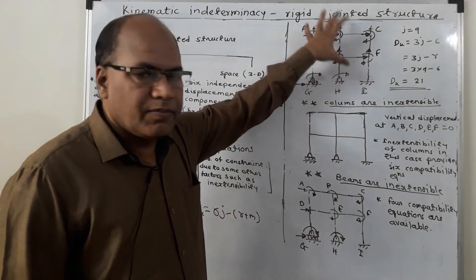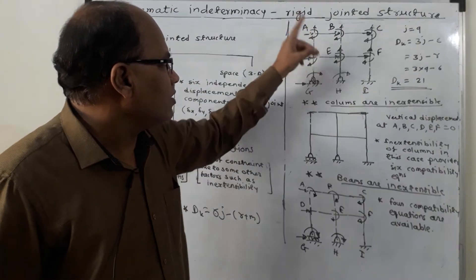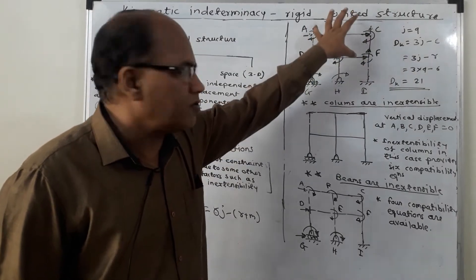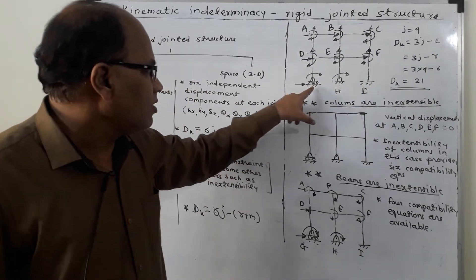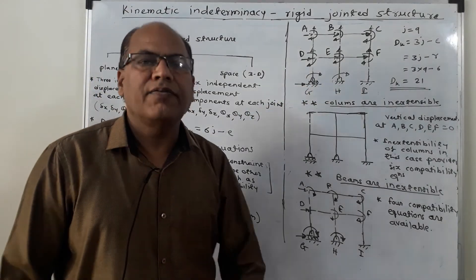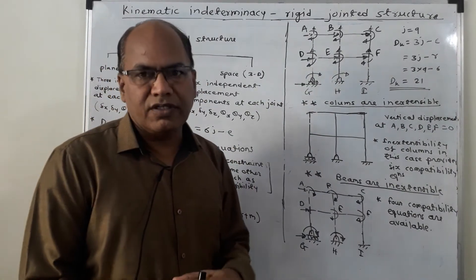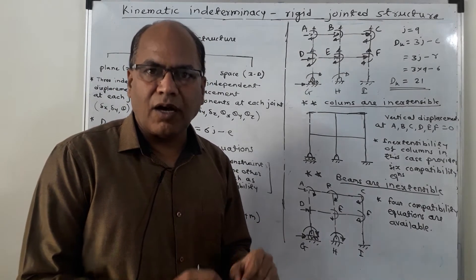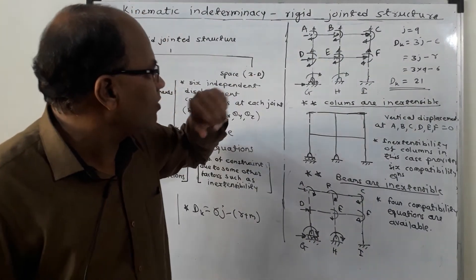I am considering a double storied building frame. It has 6 number of rigid joints: A, B, C, D, E, F, and supports G, H, I. Out of these 3 supports, G is the roller support, H is the hinge support, and I is the fixed support. To get the degree of kinematic indeterminacy dk, I am going to count the actual number of displacement components which are possible.